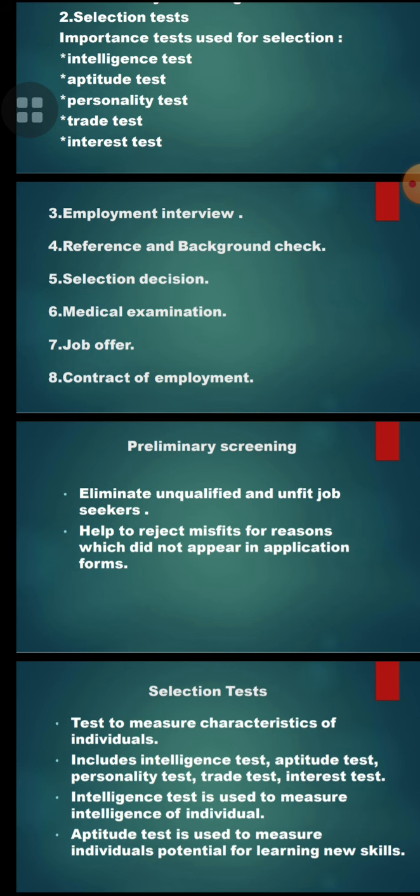Preliminary screening is used to eliminate unqualified and unfit job seekers. It helps to reject misfits for reasons which did not appear in the application forms. So unqualified and unfit job seekers are filtered out during preliminary screening.